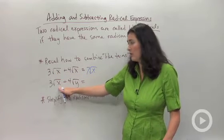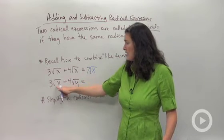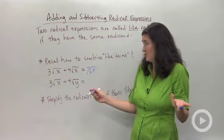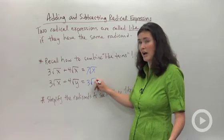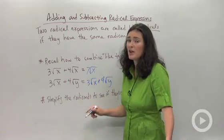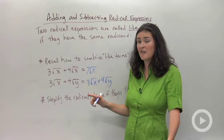In this second example, we have different radicals or unlike radicals. Three square roots of x plus four square roots of y is just three square roots of x plus four square roots of y. Those can't be combined because they're unlike radicals. You can combine them only if they have the same radicand. That's what you're looking for.